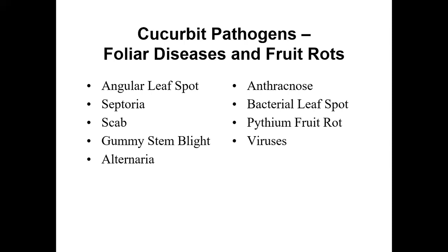I will freely admit that with the Cucurbit crop group, I send more samples to the lab for lab diagnosis than all of my other crops combined. I bring up these ones largely because you need to be aware of them. They are hard to diagnose in the field, but it is important to be able to recognize if there is a problem and start to narrow down where that is. Depending on the value of the crop, many crops will be receiving broad-spectrum preventative fungicides during that late vegetative growth and fruit sizing period to maintain fruit quality.